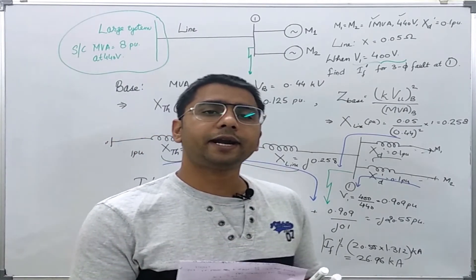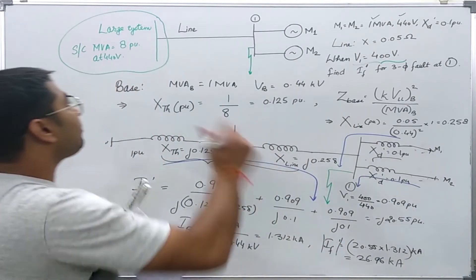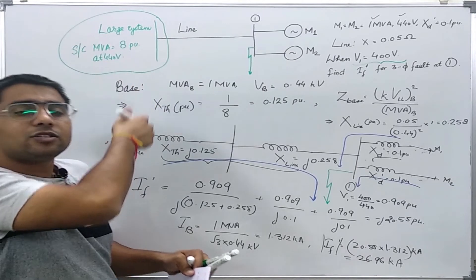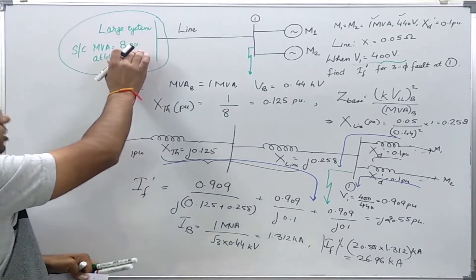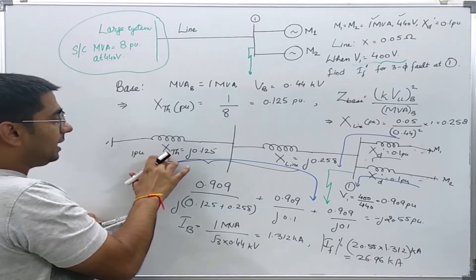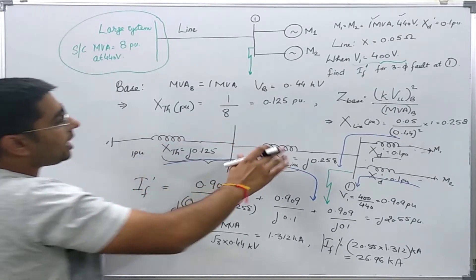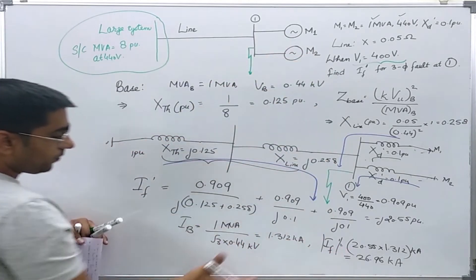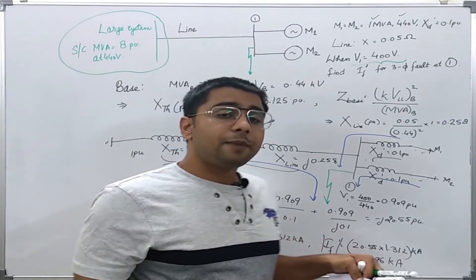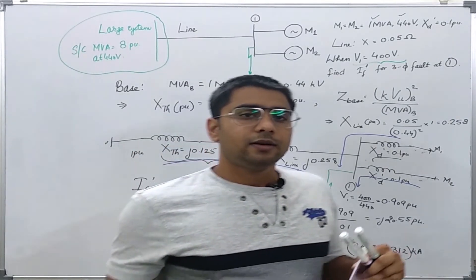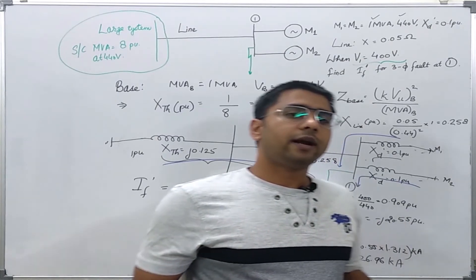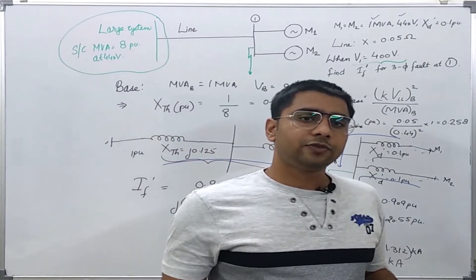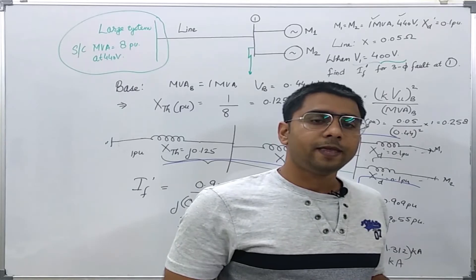In this way, the short circuit MVA concept is utilized to find the fault current, even without knowing all individual elements of the power system. Since short circuit MVA was given, the reactance of the power system was easily determined. We will see another example involving the short circuit MVA concept next.